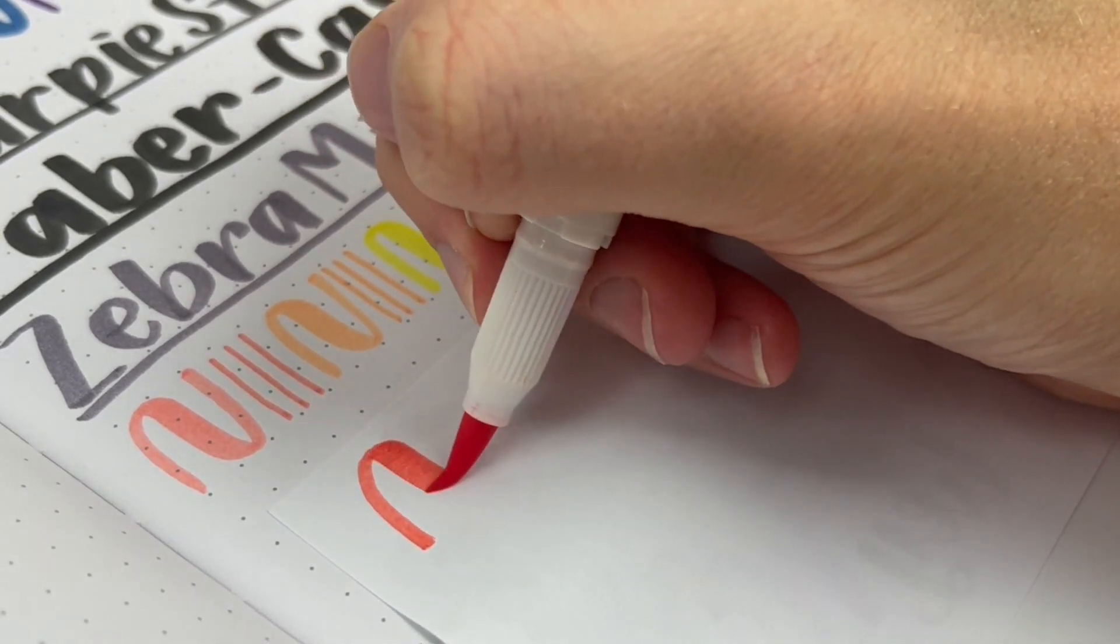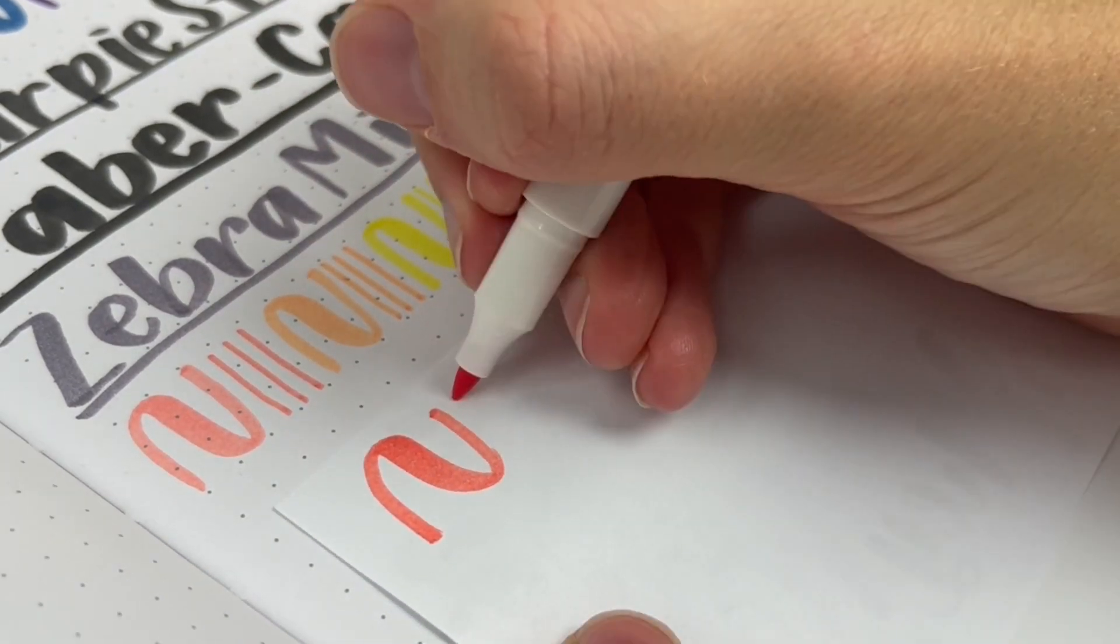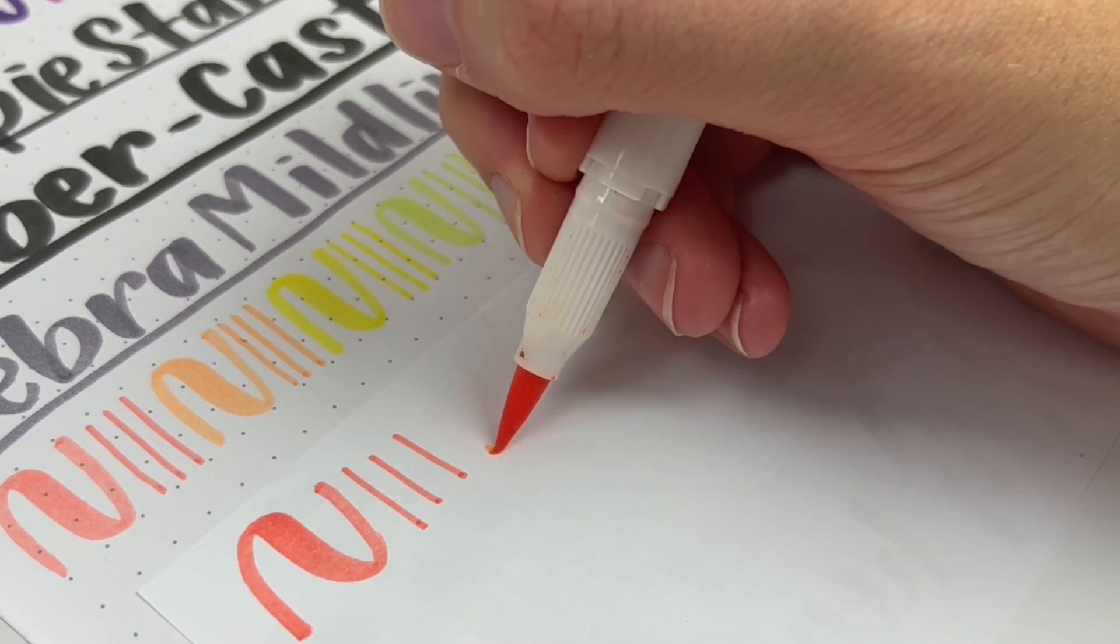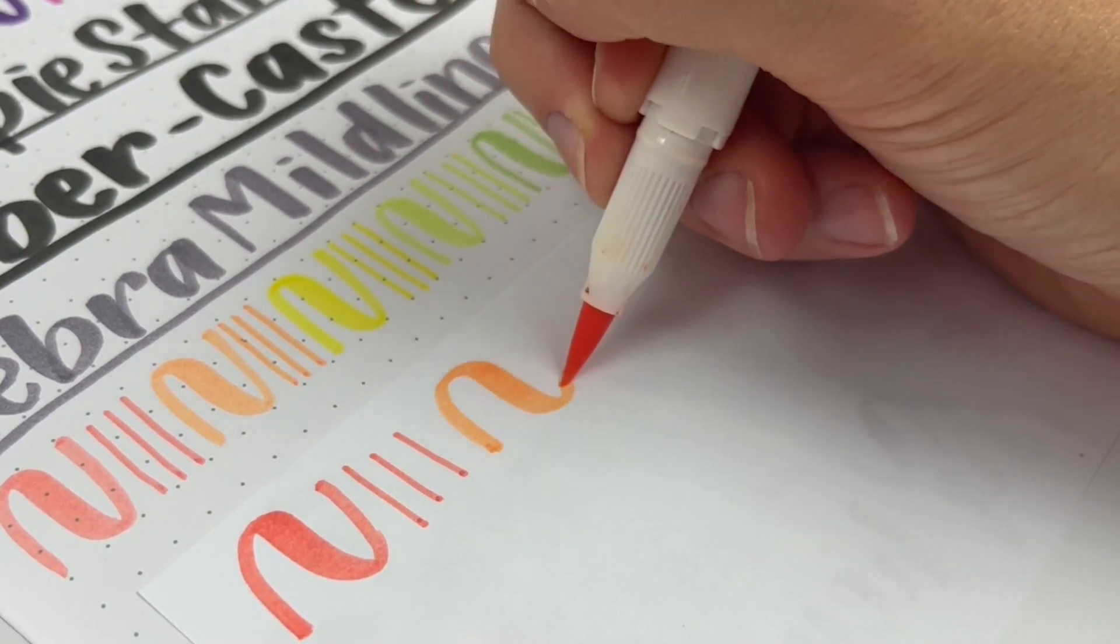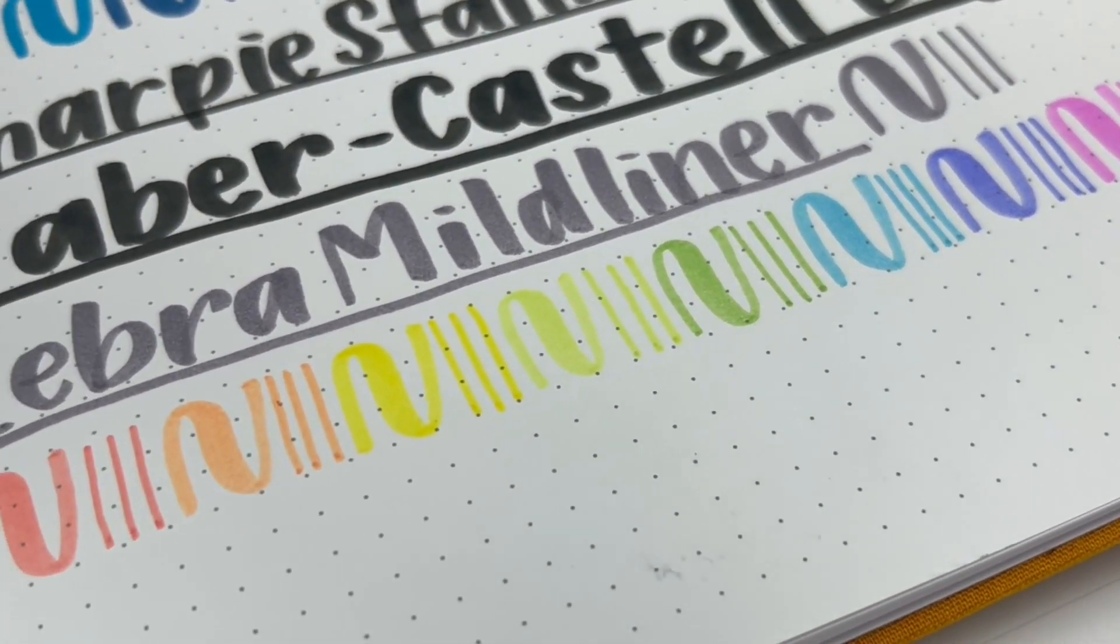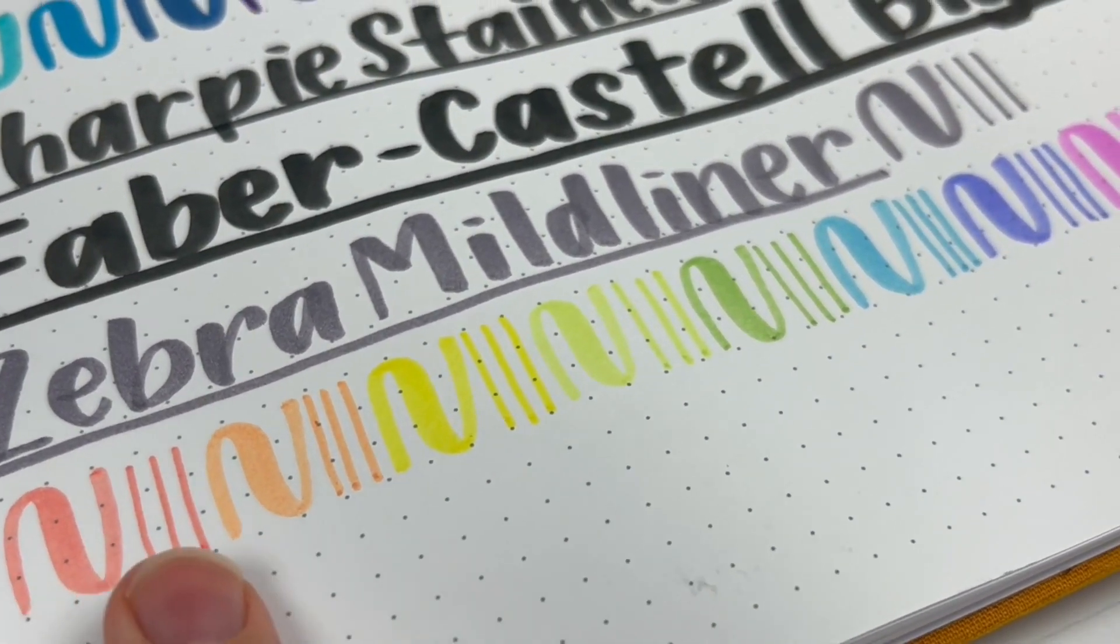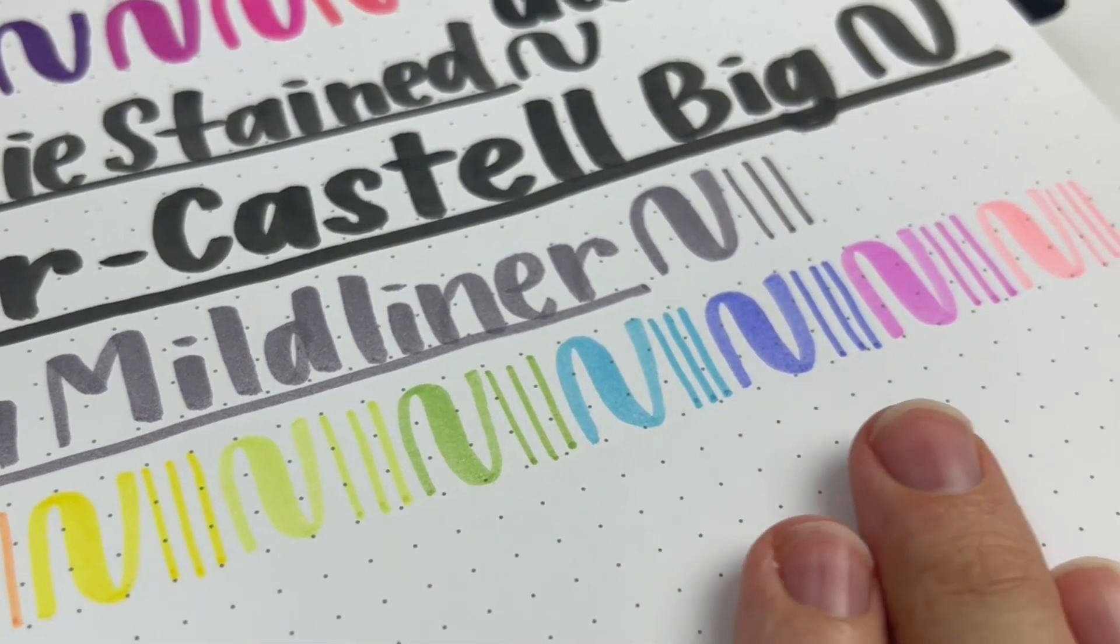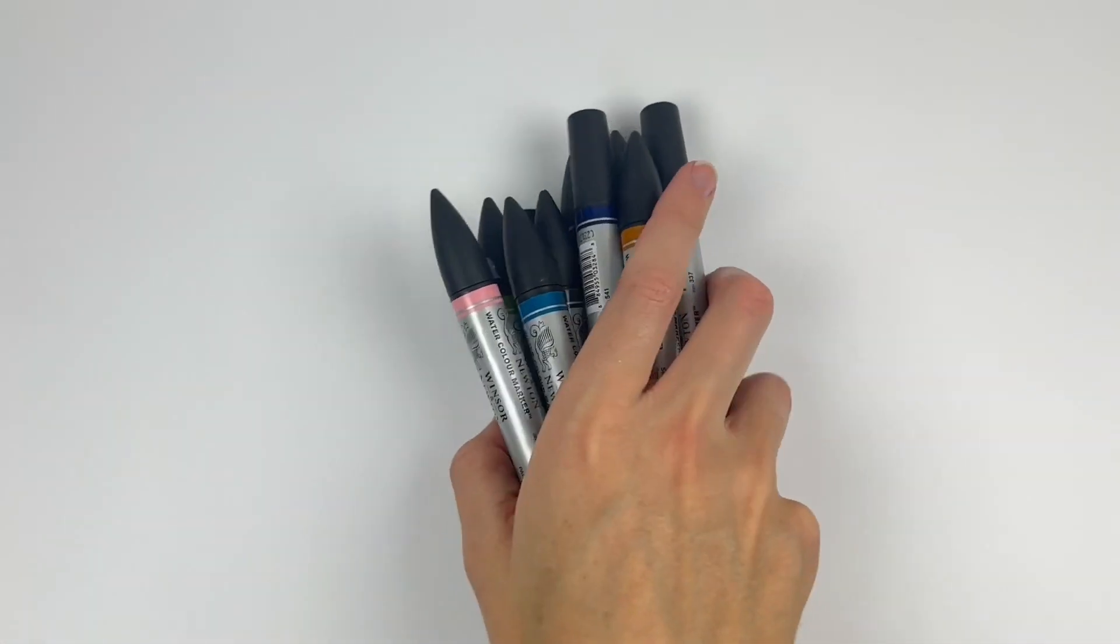I accidentally wasn't recording when I swatched these colors, so I just wanted to show how they write. These brush pens have a really great brush tip. It's softer than Karen markers, but easier to control than Tombow. I also love the dual tip. I highly recommend these to a beginner or a pro if you like the mild colors.